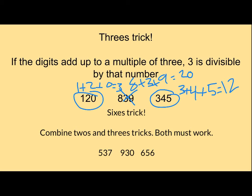So now for the sixes trick, it combines the twos and the threes trick. It needs to work. So the first one, I can eliminate it right away because it's not an even number.